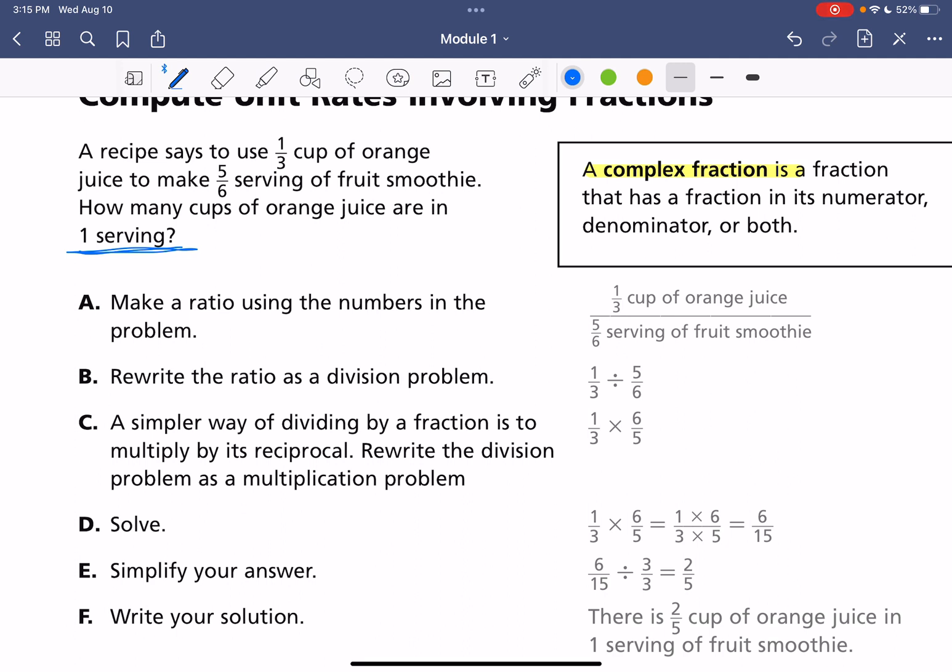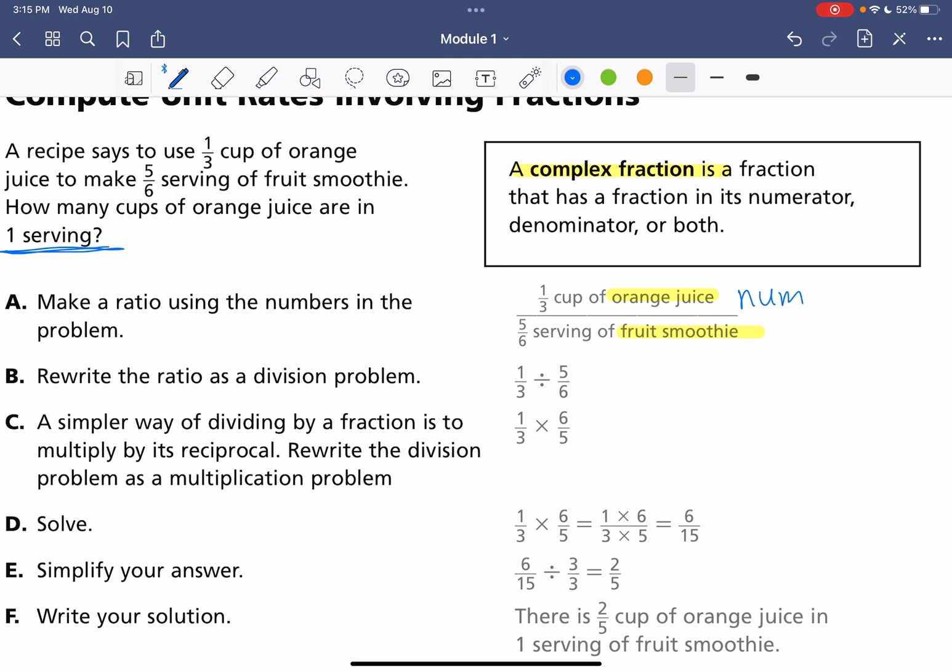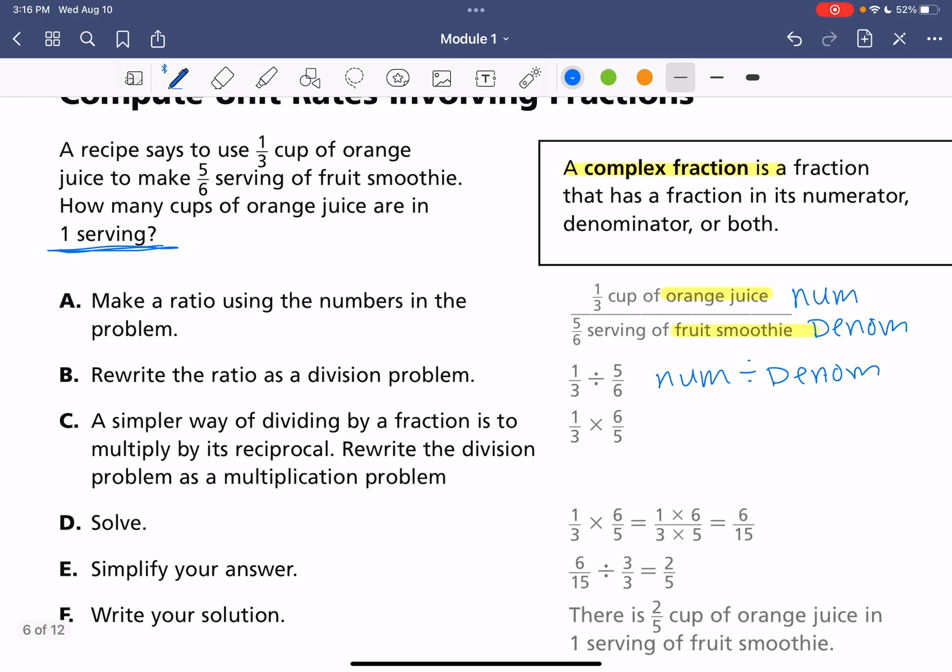So we have our ratio of orange juice to fruit smoothie. And then we're going to rewrite it as a division problem. So here we took our numerator and our denominator. And we did numerator divided by denominator. It's just a common mistake to maybe flip those. So it's important to remember that the numerator goes first, divided by the denominator.